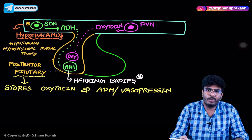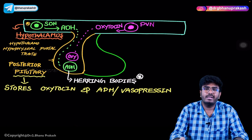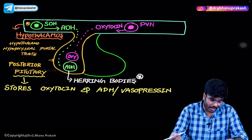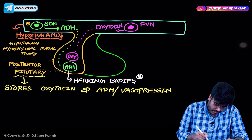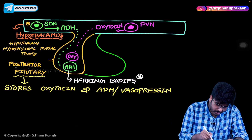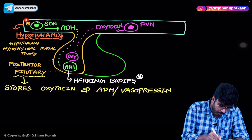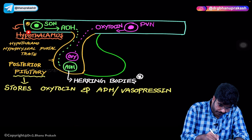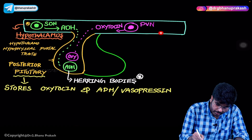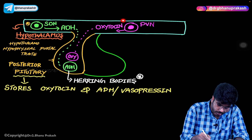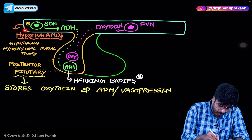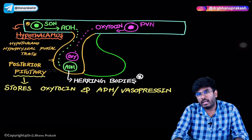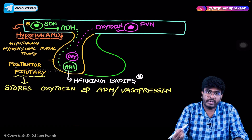Welcome back. In this video, let's discuss the posterior pituitary and its hormones. Looking at the top here, the area I'm pointing to is the hypothalamus — you already know this. The hypothalamus has two important nuclei.